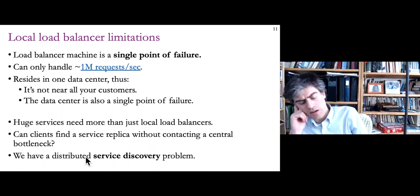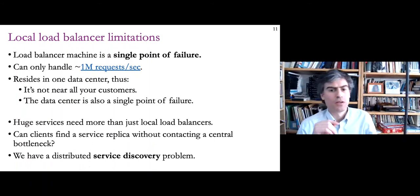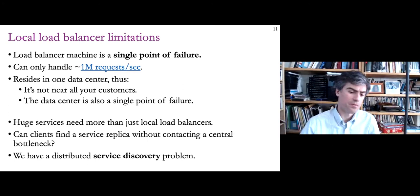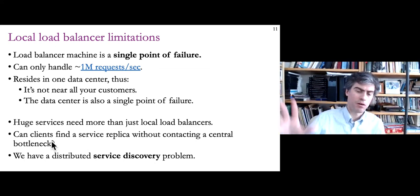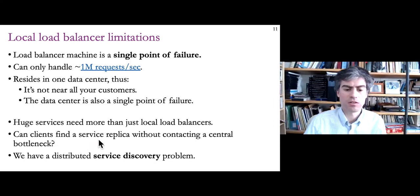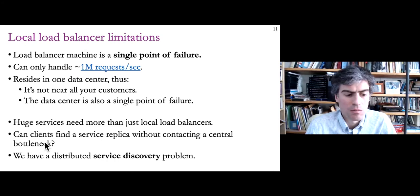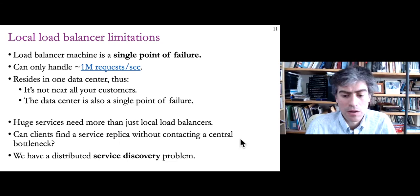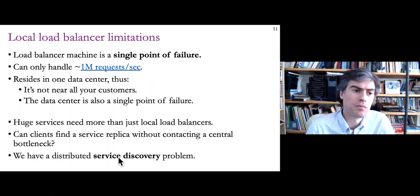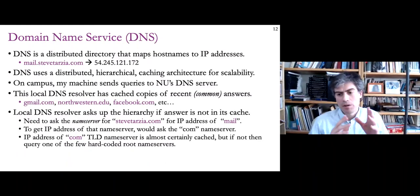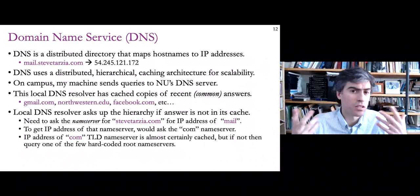For a really huge service, you need more than just local load balancers. What we want is a distributed solution to handling traffic — this turns out to be a service discovery problem. We want clients to find a service replica without contacting a central bottleneck. With local load balancers, all clients contact a central machine which relays requests to replicas. When that becomes a bottleneck, you need a different approach, which we call global load balancing.